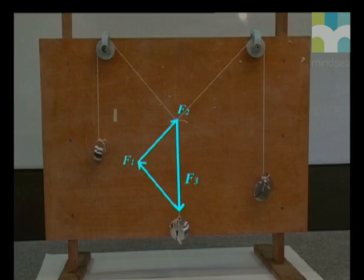The triangle is formed by the three vectors, placed head to tail. The triangle is the closed figure again. We have added all the vectors and the result is zero force. We know it's zero because nothing is moving.